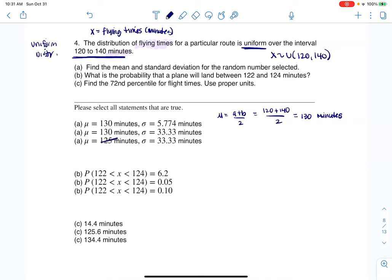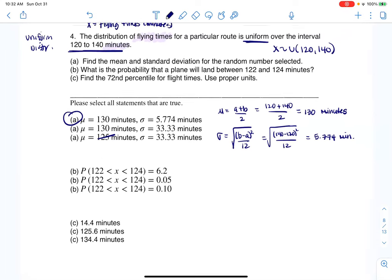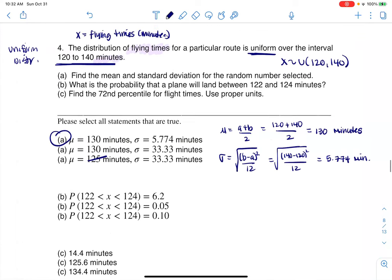That's not correct. Now the standard deviation is the square root of B minus A squared over 12. So if I want the standard deviation, we're going to go 140 minus 120. I'm going to square that number, divide it by 12. And let's get the standard deviation. When I crunch that, I'm going to get 5.774. And again, the units are minutes. So that takes us to that answer.